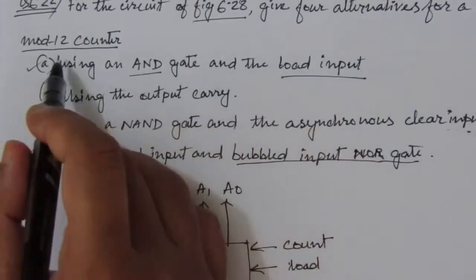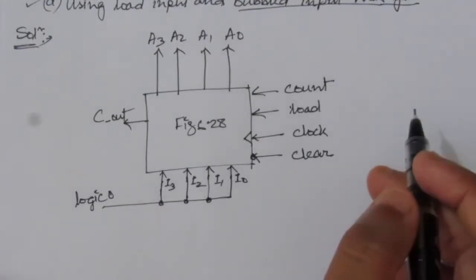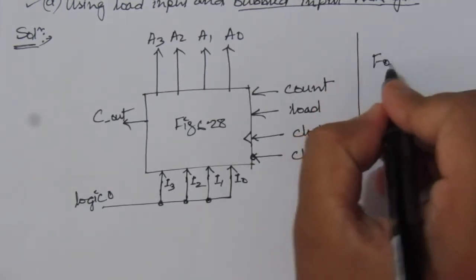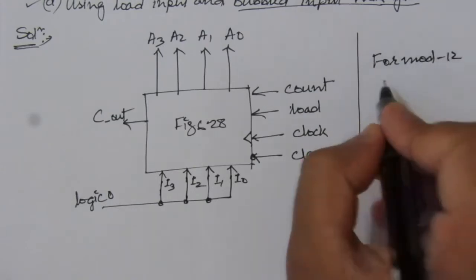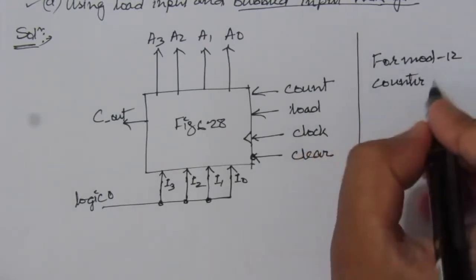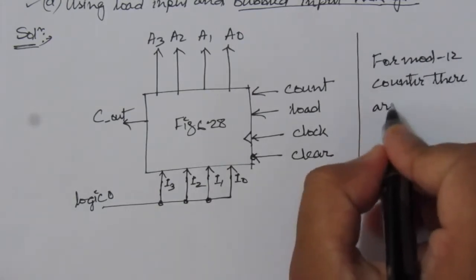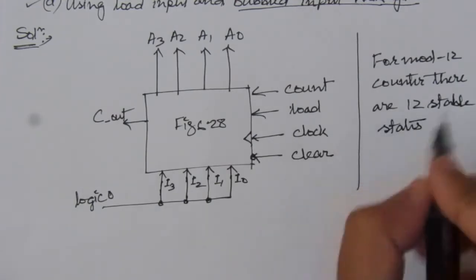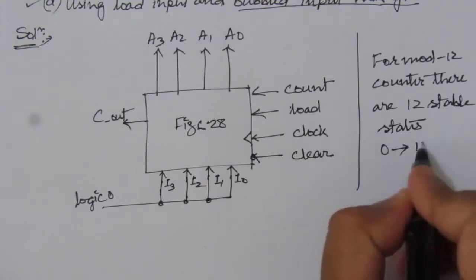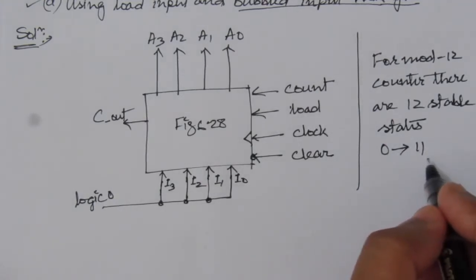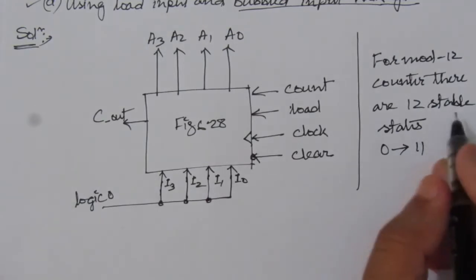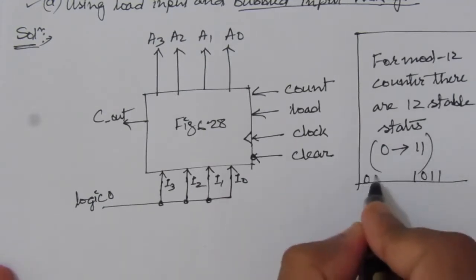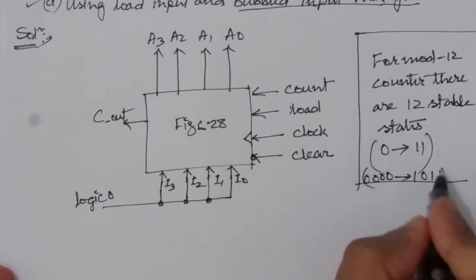Now in the first case we have to use an AND gate and load input to make a mode 12 counter. For a mode 12 counter, there are 12 stable states — from 0 up to 11. That means including 0, we will have 12 states. Whenever we have 11 — which is 1011 in binary — and 0 means 0000. So from 0 to 11, we have to count.